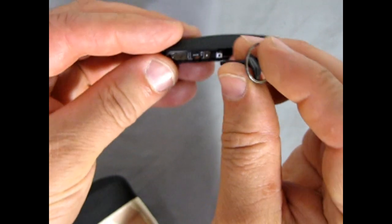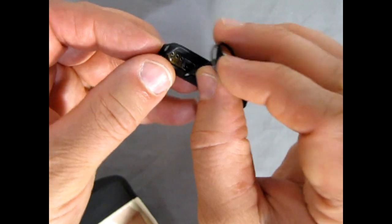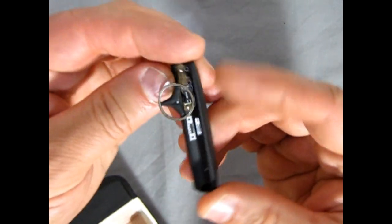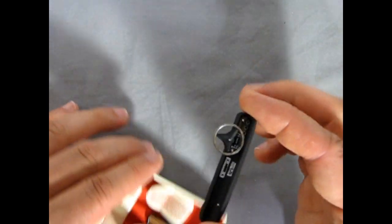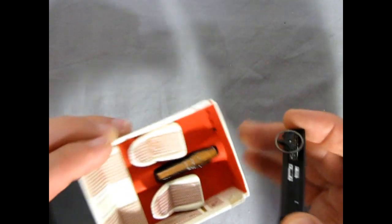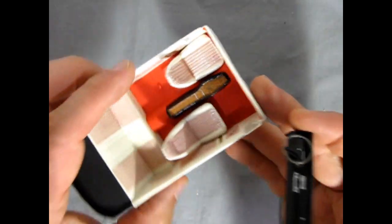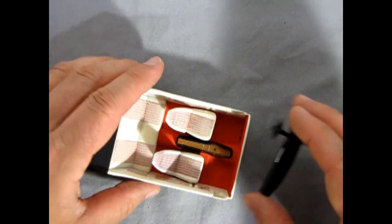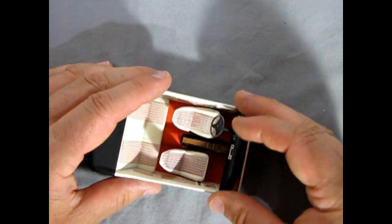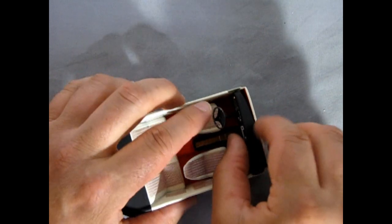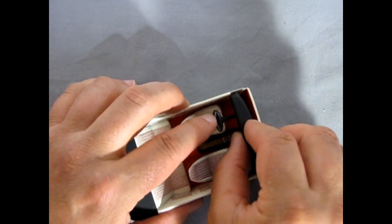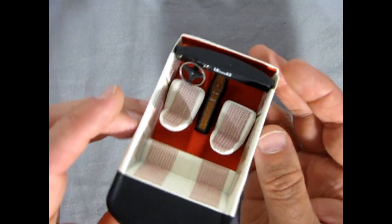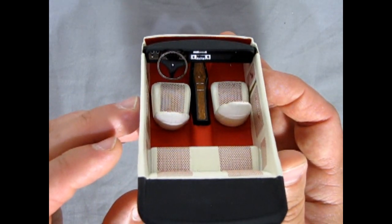Our pedals are actually correct as well, having the three for the standard transmission which is included in the kit. The dashboard will go in there quite nice, just right there. The steering wheel will come into the back and you get that really beautiful looking interior.